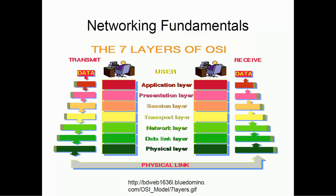A user transmits data packets which are received by another user. As the data passes down each layer, headers are added and the data packets increase in size. A router operates more or less at the network layer. At the network layer they are called packets, and at the data link layer they are called frames — that is the terminology we use.